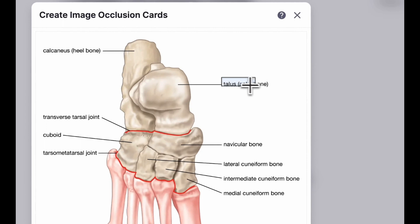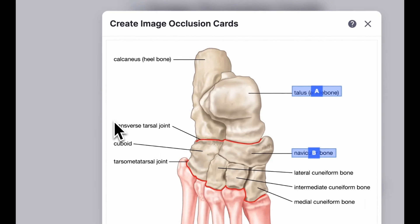Now, click and drag to select the parts of the image you want to test yourself on. Each hidden section, called an occlusion, becomes a separate flashcard.